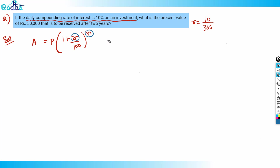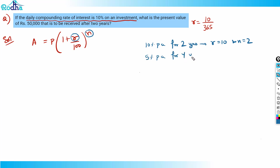For example, if it is 10 percent per annum for two years, we write r = 10 and n = 2. Similarly, if it is 5 percent per annum for four years, we write r = 5 and n = 4.